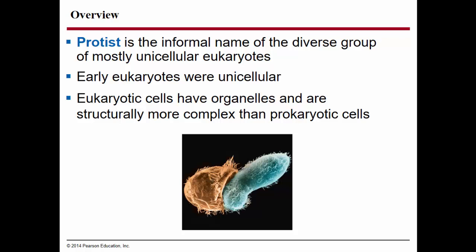Remember also that other eukaryotes include plants, animals, and fungi. Animals are considered to be a single kingdom, and so are plants and so are fungi. These eukaryotes will be discussed in later chapters.